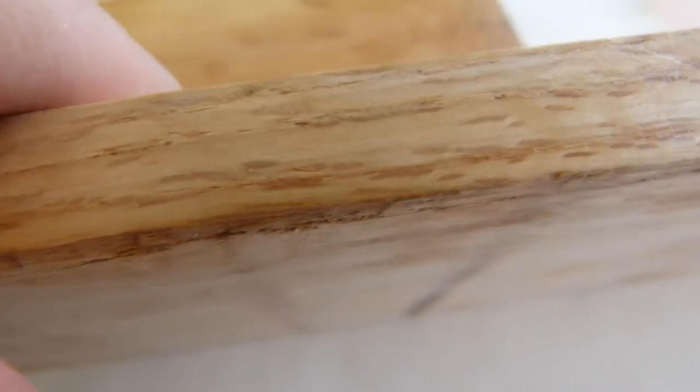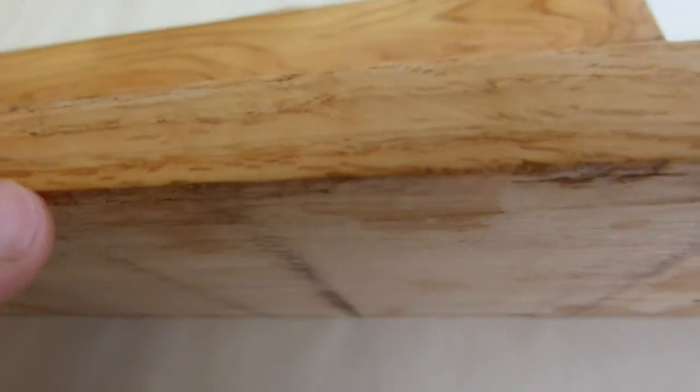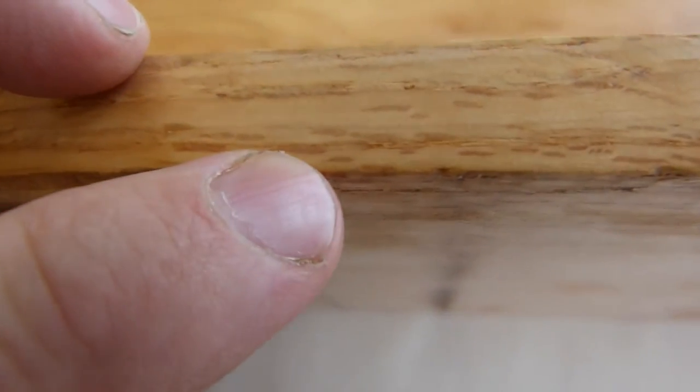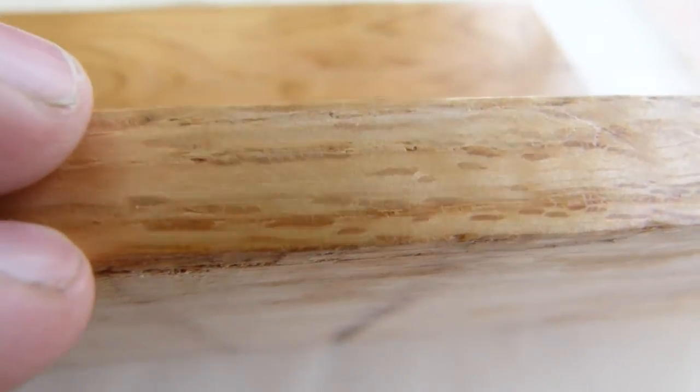You can see rays appearing a little differently on edge grain. There, some of them could look like smears of ray. Let me see, yeah, a little bit here. Here, they have this smeary appearance. So that's how rays look like.